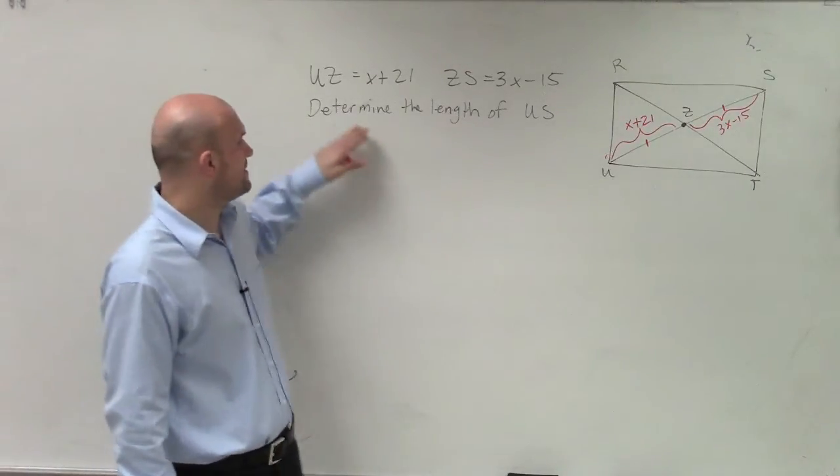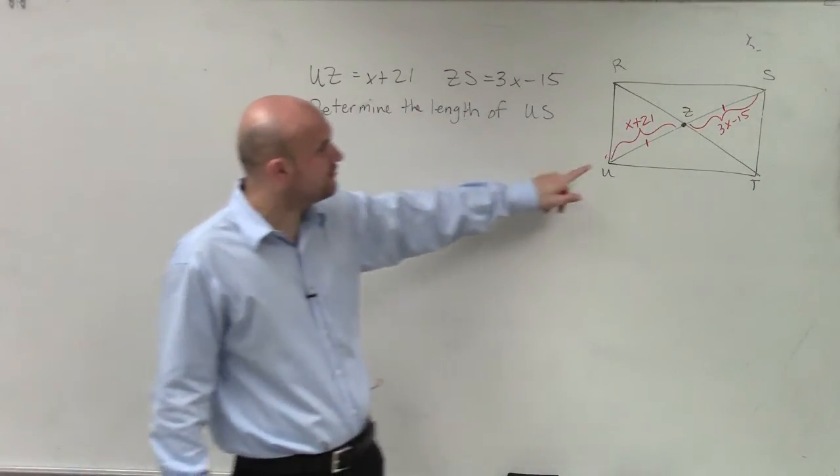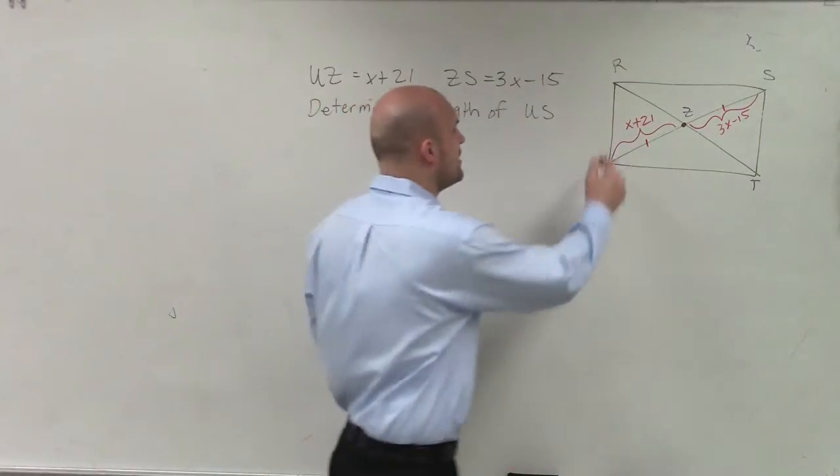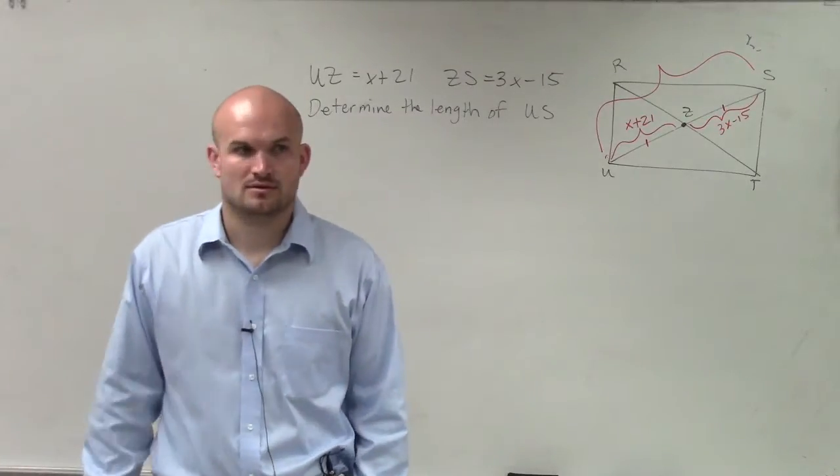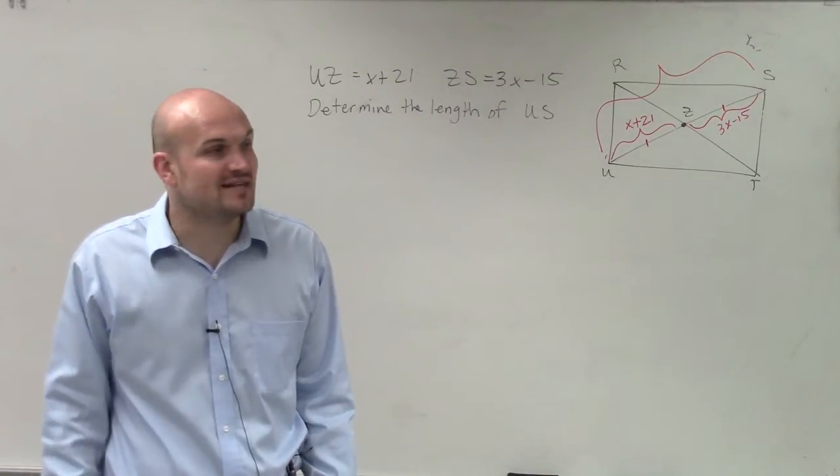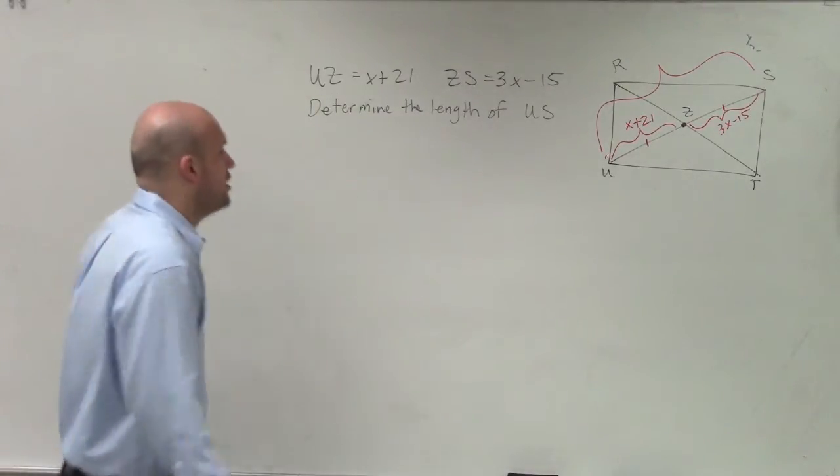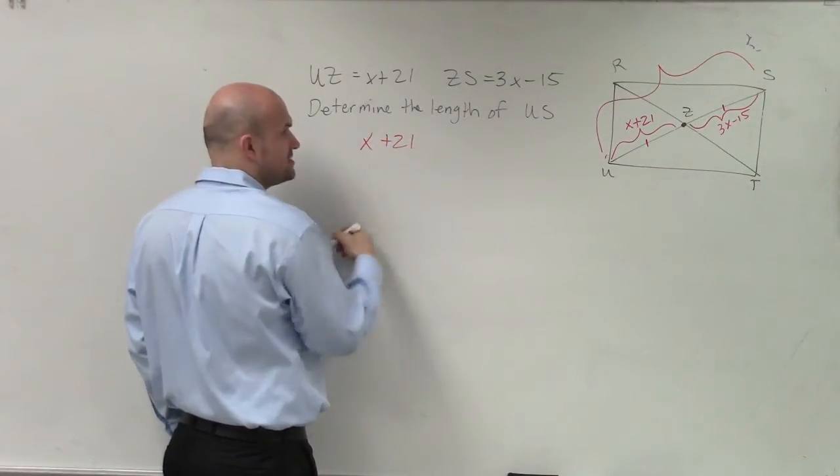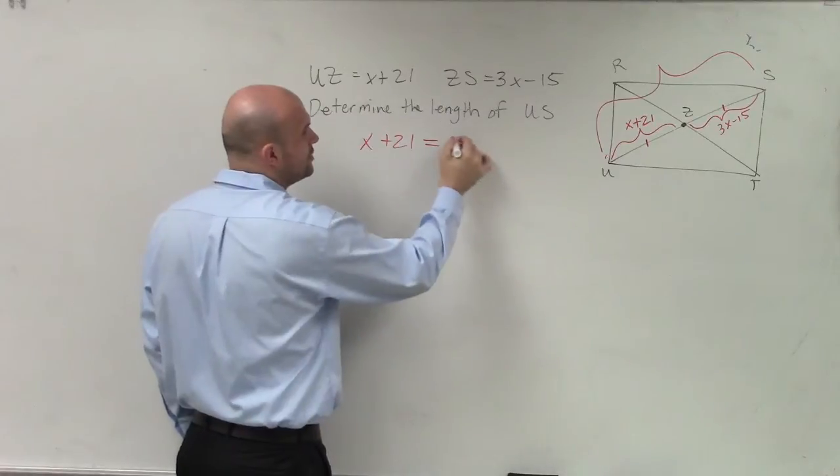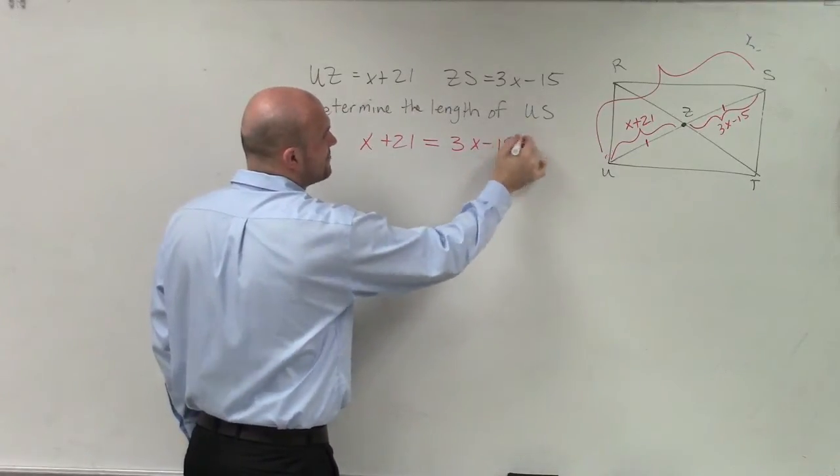So ladies and gentlemen, it says determine the length of US. So they want us to find, well, what is that length? So first, we need to find the value of x. So since my diagonals are bisected, we know that x plus 21 is equal to 3x minus 15.